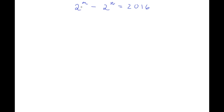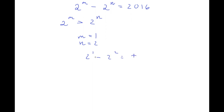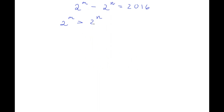Now as you can see, because 2 to the power of m minus 2 to the power of n is equal to a positive number — which in this case is 2016 — we know that 2 to the power of m is greater than 2 to the power of n. For example, if m was equal to 1 and n was equal to 2, we would have 2 to the power of 1 minus 2 squared equal to negative 2, which is a negative number. So because 2 to the power of m is greater than 2 to the power of n, this also means that m is greater than n because both have bases of 2.